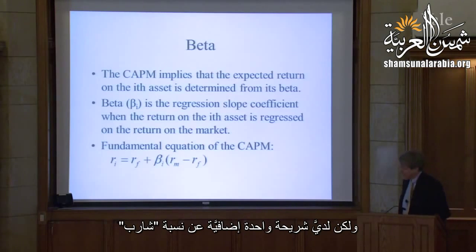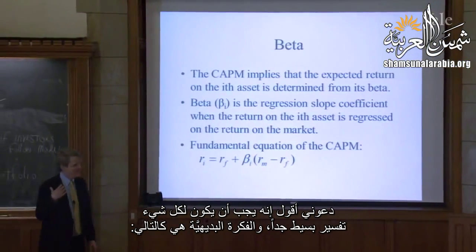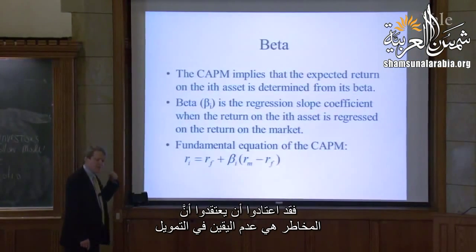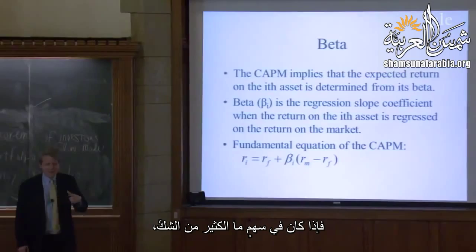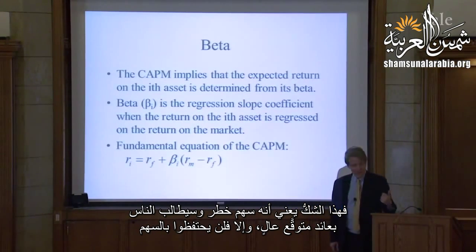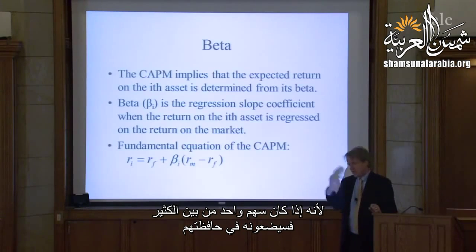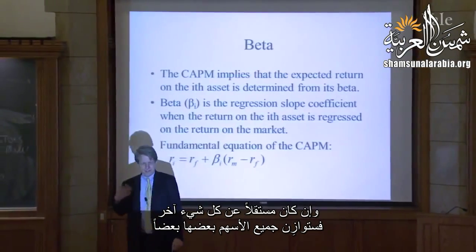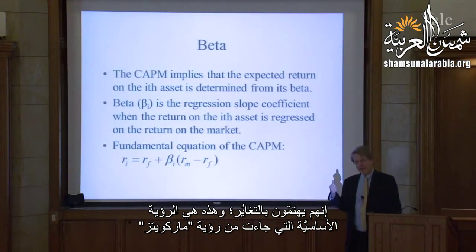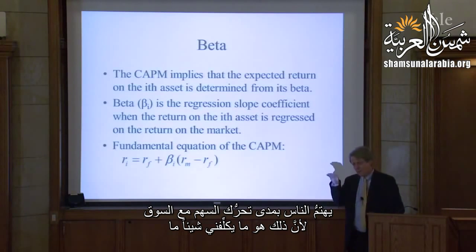Let me explain this intuitively. Starting from Markowitz, we got an understanding of what risk is, and people didn't clearly appreciate that. People used to think that risk was uncertainty in finance — if a stock has a lot of uncertainty, that means it's dangerous and people will demand a high expected return, otherwise they won't hold it. But the CAPM says no. People don't care about the uncertainty of the stock, because if it's one stock out of many, they'll put it in their portfolio and if it's independent of everything else, it all gets averaged out. So people don't care about variance.